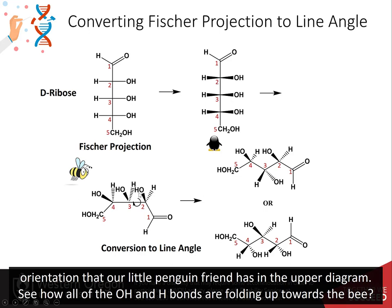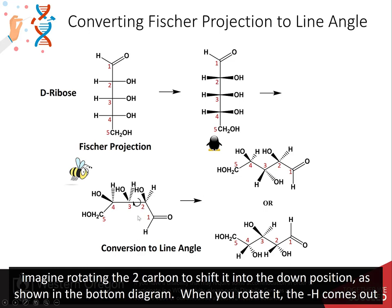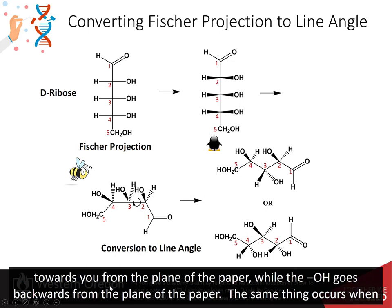Now your vantage point for looking at the molecule has shifted, and B represents the same orientation that our little penguin friend has in the upper diagram. See how all the OH and H bonds are folded up towards B? To finish the conversion to the line angle, all you need to do is rotate the bonds so that the correct bond angles are shown. For ribose, imagine rotating the 2 carbon to shift it into the down position. When you rotate it, the H comes out towards you from the plane of the paper, while the OH goes backwards from the plane of the paper.